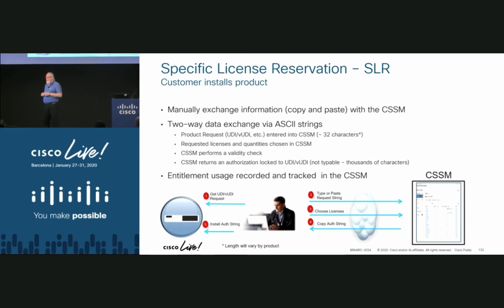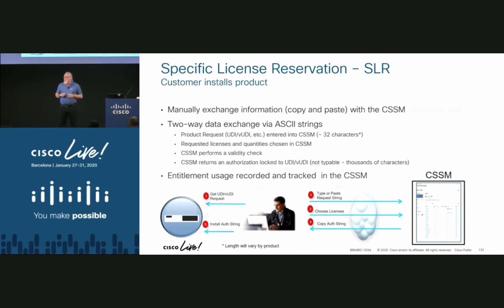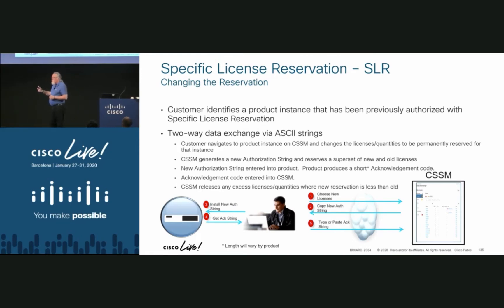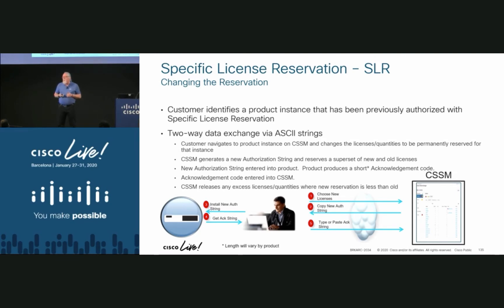What happens if you need to change the license? Say you deployed it and didn't select crypto — you need to add it. Simple: go to Cisco, select the product you want to change, select the new license you want to reserve, get the code, put the code on the box. The box enables those features and gives you back a confirmation code. You take the confirmation code back to Cisco and now they know the licenses are in use. So changes are manual too — unlike smart licensing, where changing a feature fires off an automatic update and there's nothing for the administrator to do beyond configs.